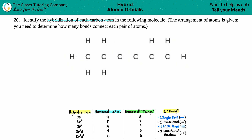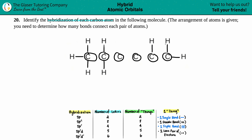So we'll have single bonds here for each hydrogen. Now let's work from left to right - we need to connect these carbons via at least single bonds, so they all have to be bound by at least a single bond.